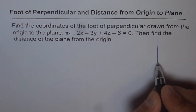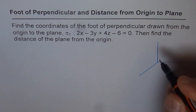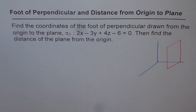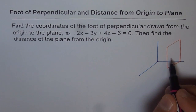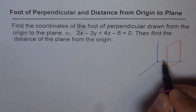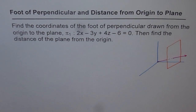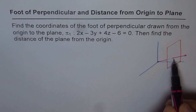Let us sketch this and understand the situation. We have R³ space with a plane in it. The origin point O is given, and we want to find the distance from the origin to the plane, which has to be along the normal to the plane — that shortest path goes to the foot of the perpendicular.